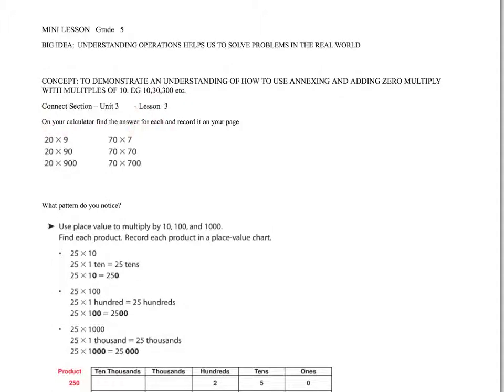So on your calculator find the answer for each of these and record it on your page. Go ahead and press pause and do that now. Alright, when we take a look at them, 20 times 9 is 180, 20 times 90 is 1,800, and 20 times 900 is 18,000.